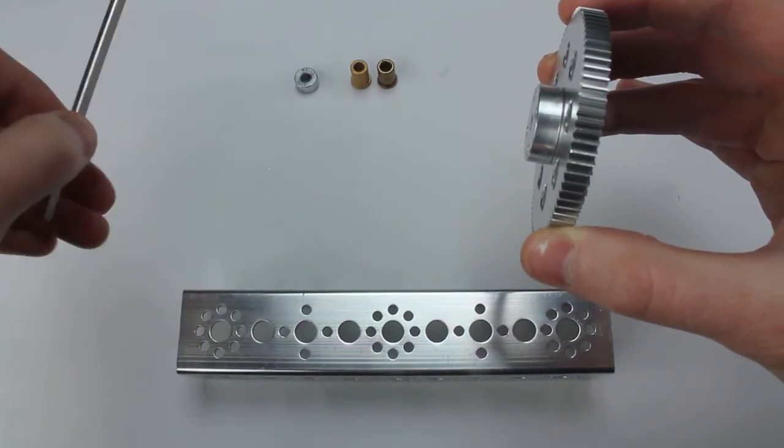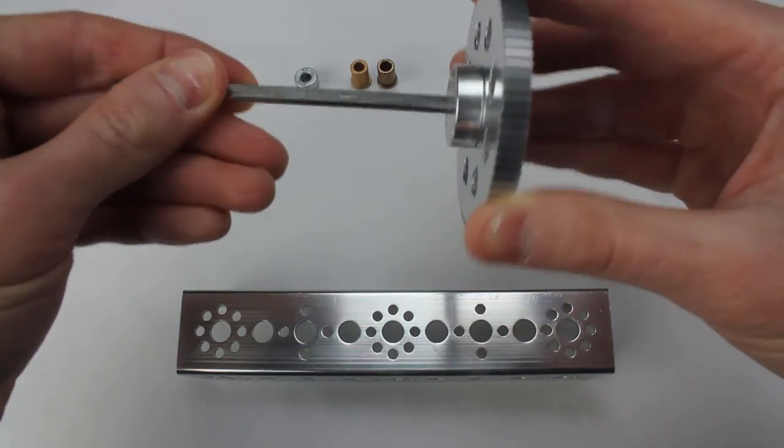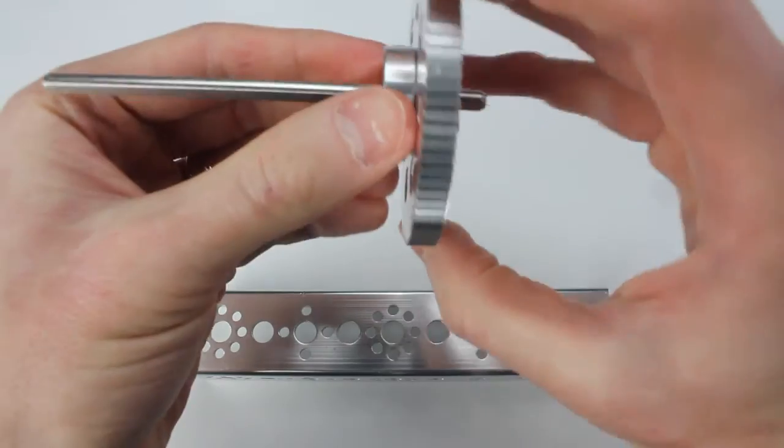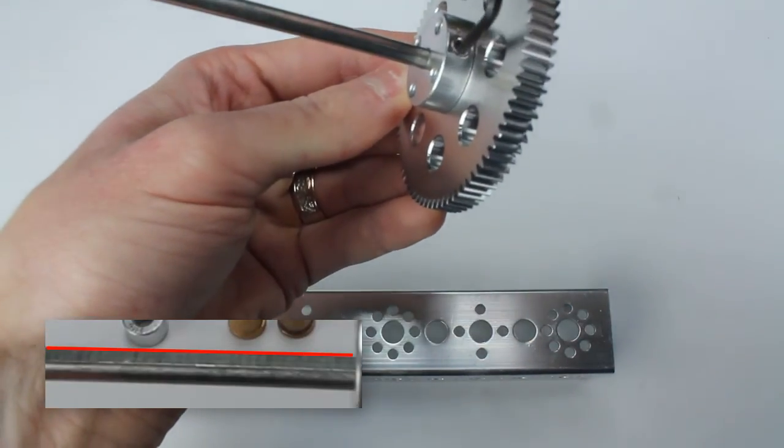Then slide the hub and gear onto the axle. Align the set screw of the hub with the flat part of the axle and tighten.